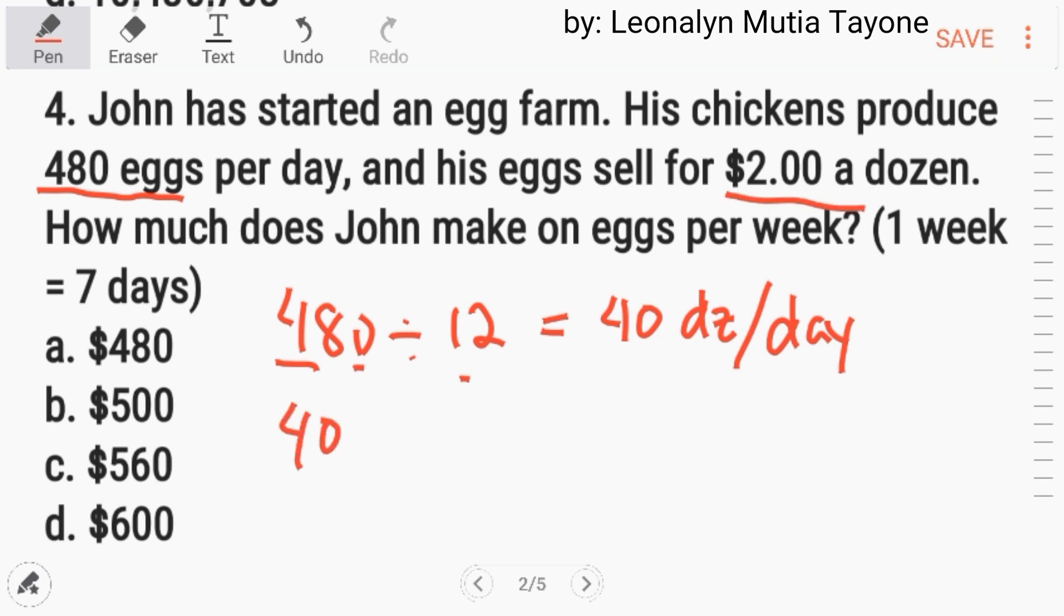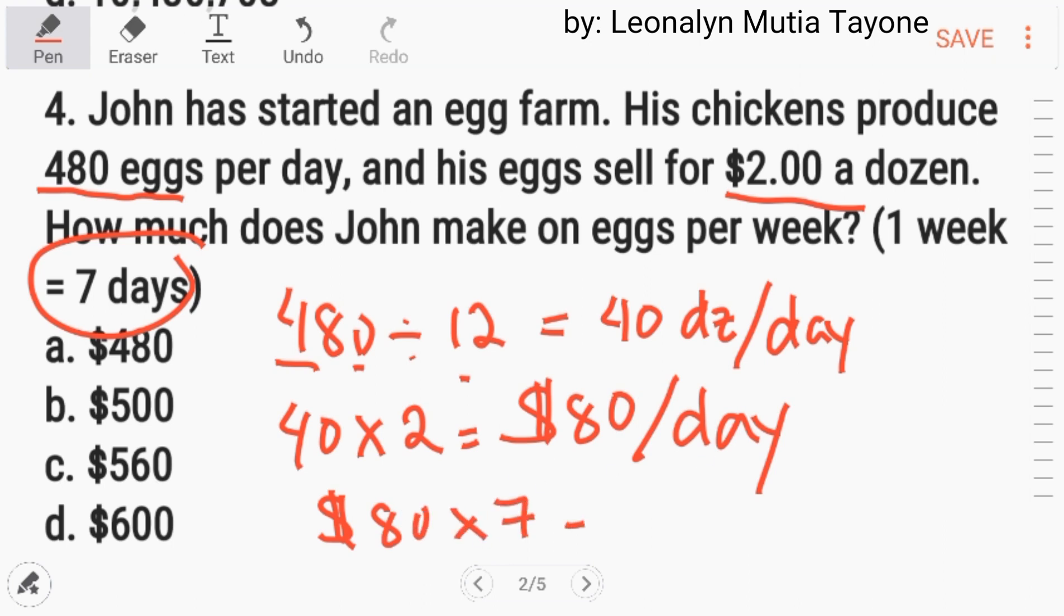48 divided by 12 is 4. Tapos, itong zero kopyahin lang. So, 40 dozen per day ang meron siya. Per dozen is $2. So, 40 times 2 equals to $80 per day. Seven days. Ang question is, how much does John make on eggs per week? So, $80 per day man siya. So, times 7, that is 56, tapos isang zero dito. So, in one week, naka-560 siya. $560, letter C.